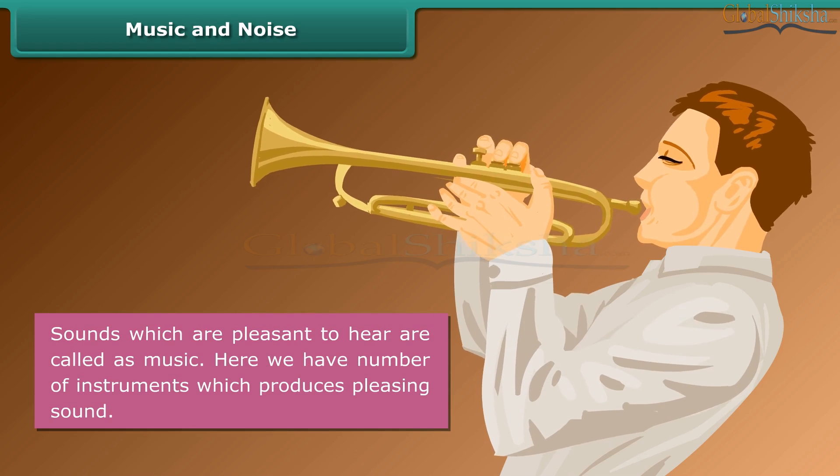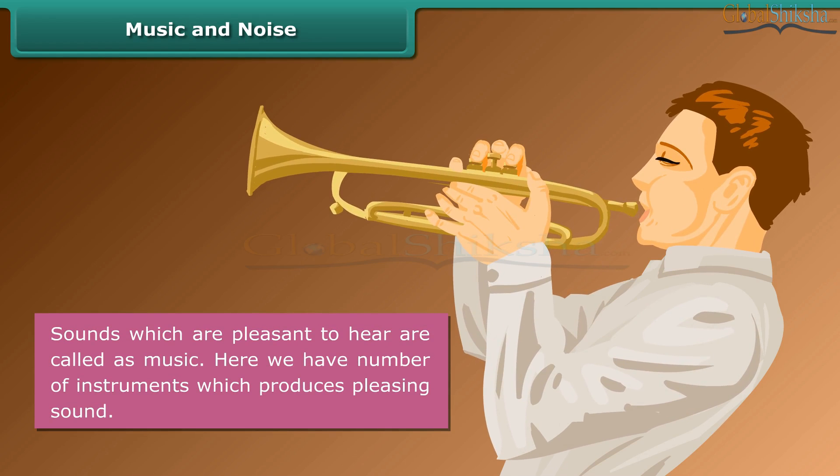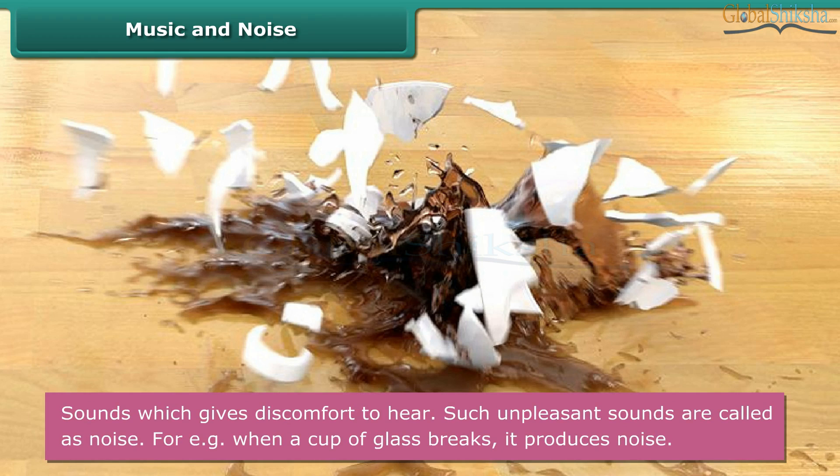Music and noise. Sounds which are pleasant to hear are called as music. Here we have number of instruments which produces pleasing sound. Noise. Sounds which gives discomfort to hear. Such unpleasant sounds are called as noise. For example, when a cup of glass breaks, it produces noise.